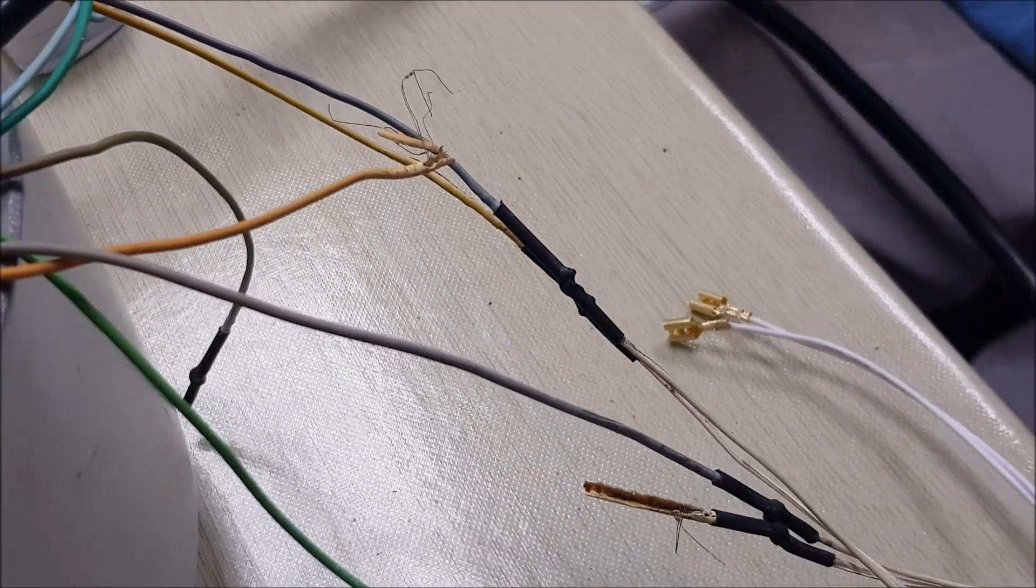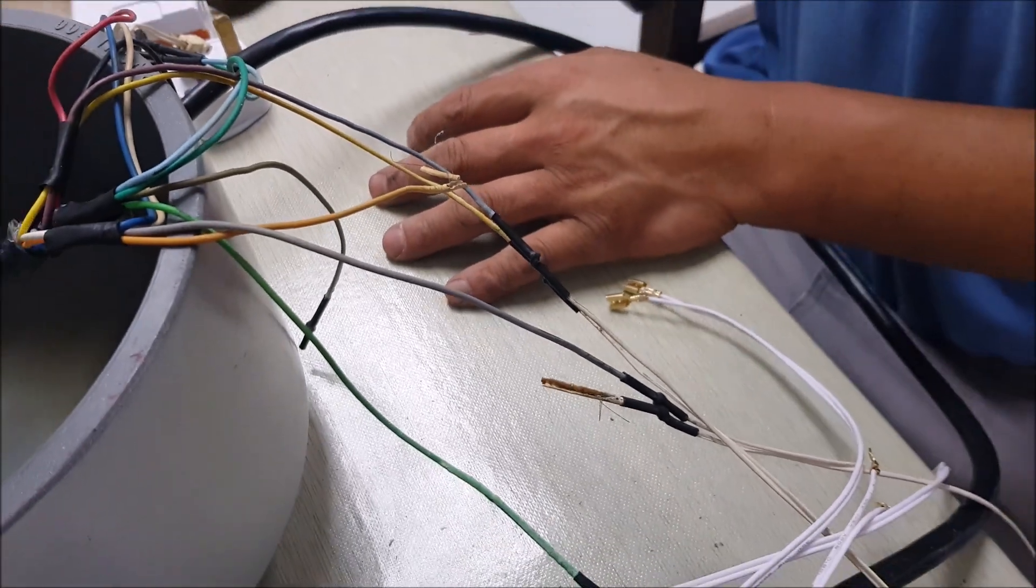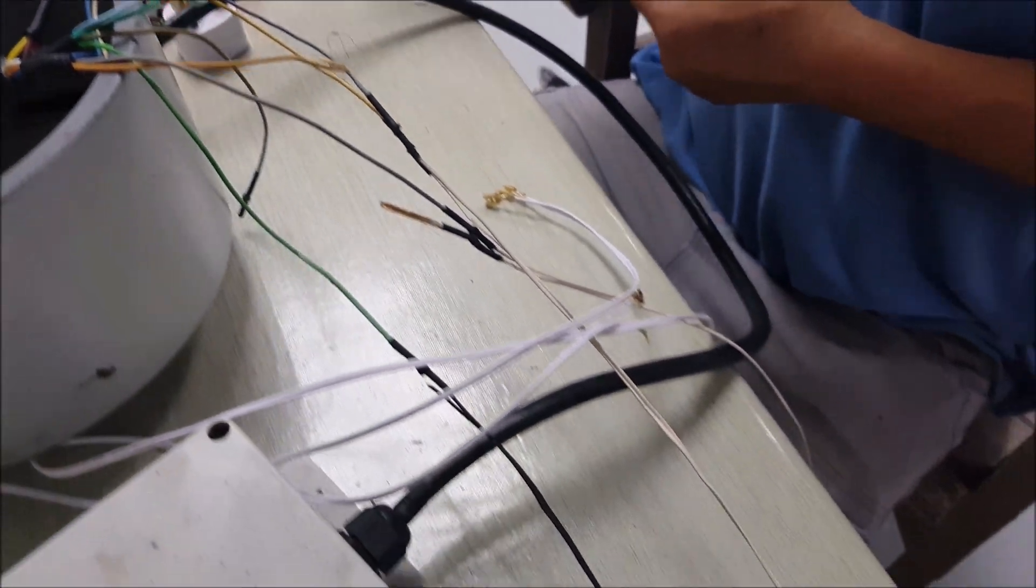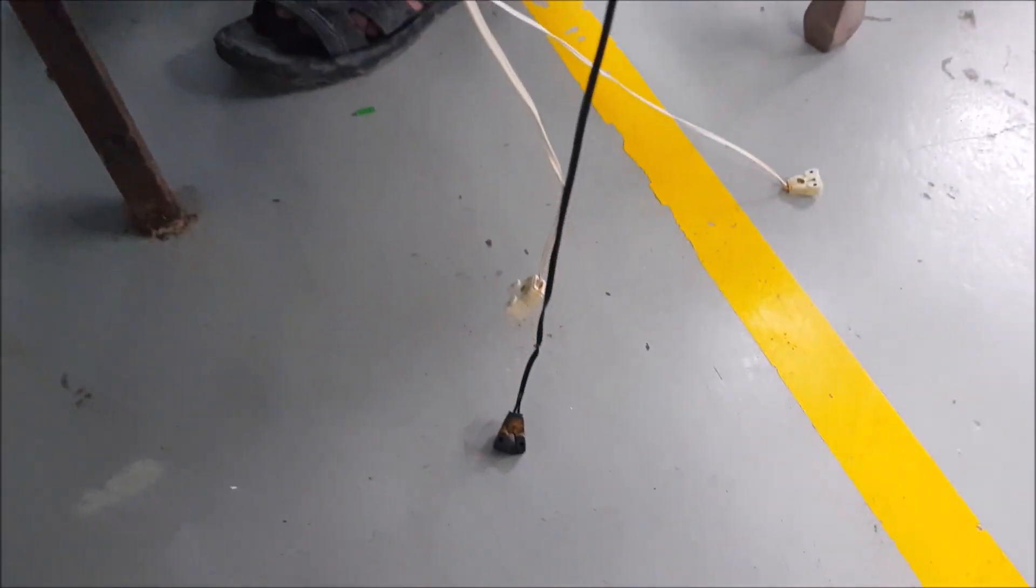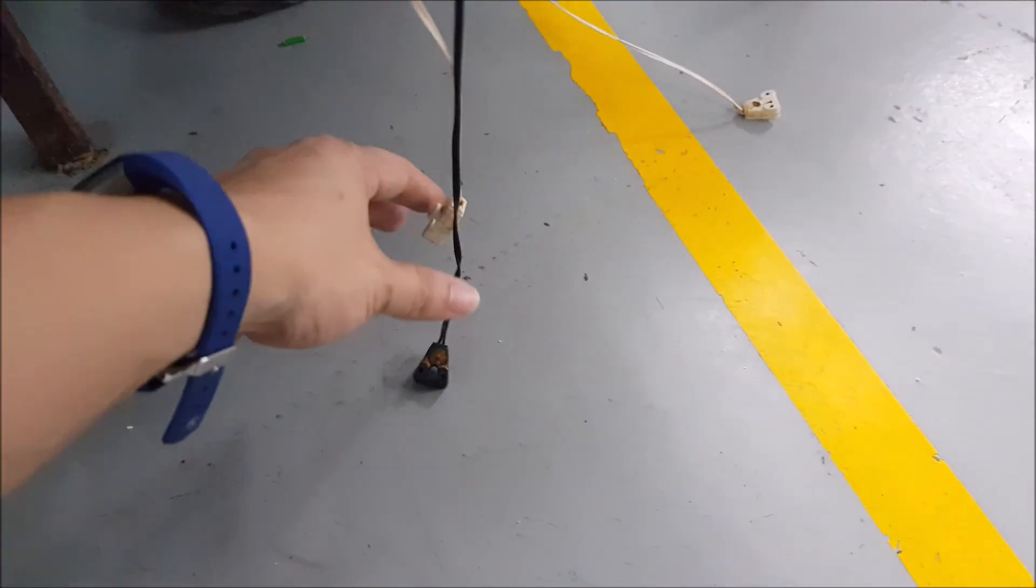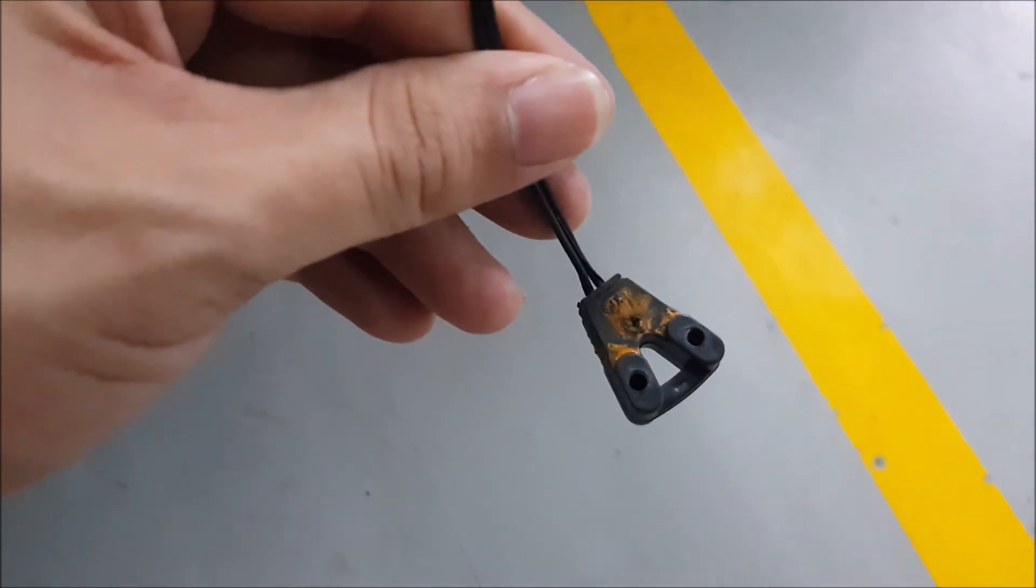What we see here is the oxidization of the electrical connections, mainly soldered connections. Solder tends to oxidize over time. As you can see, the terminals connecting to the light bulb have also oxidized.